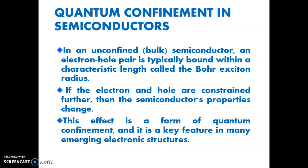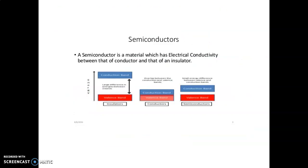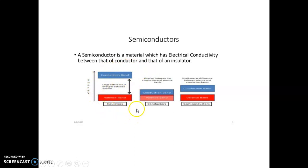We can develop various types of semiconductors with various properties according to our applications. This effect is a form of quantum confinement and it is a key feature in many emerging electronic structures. What is a semiconductor? A semiconductor is a material which has electrical conductivity between that of a conductor and that of an insulator. The conduction band is indicated in blue color and the valence band in red color.